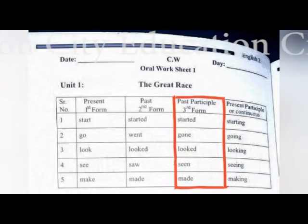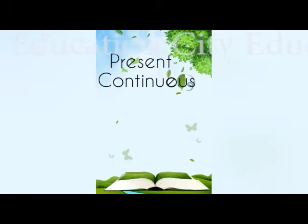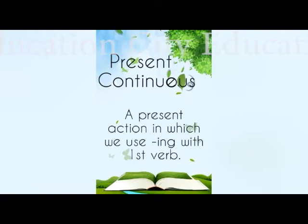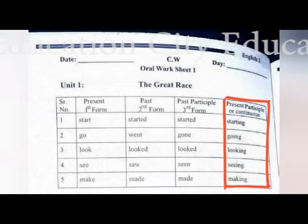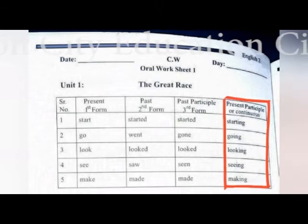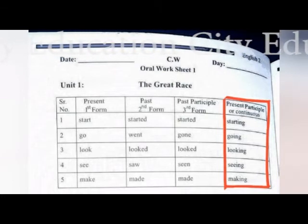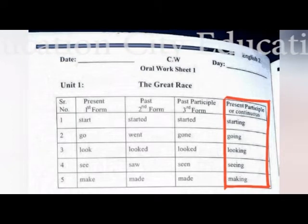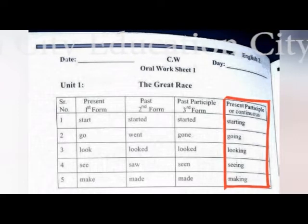We have one last form left — present continuous. Present continuous is a mixture of verb plus ing, and it refers to an action happening right now. Here we add ing: start becomes starting, go becomes going, look becomes looking, see becomes seeing, and make becomes making.